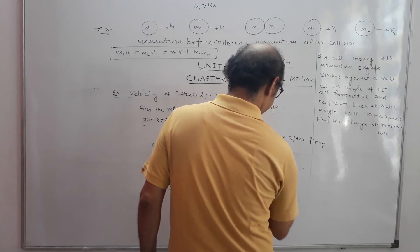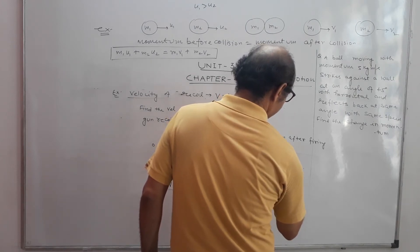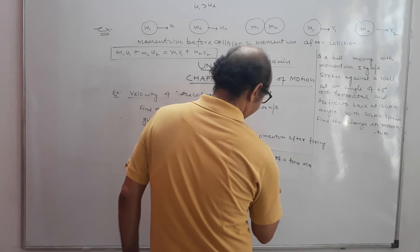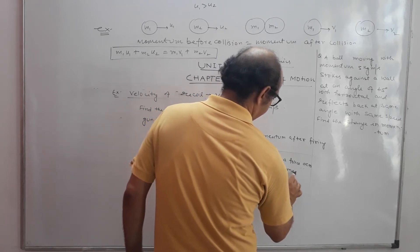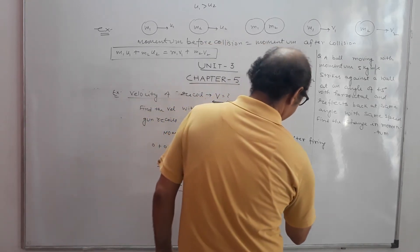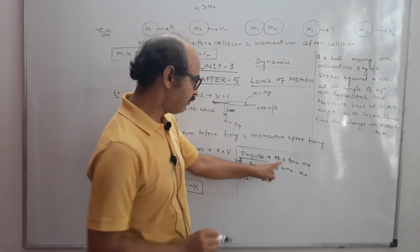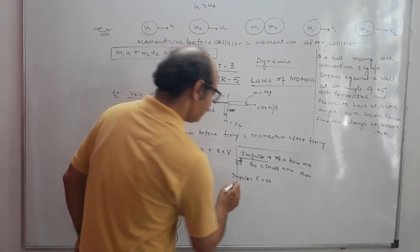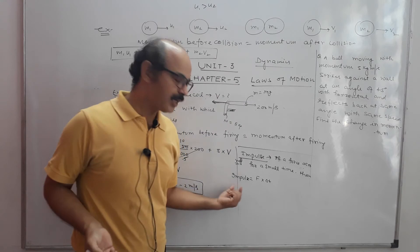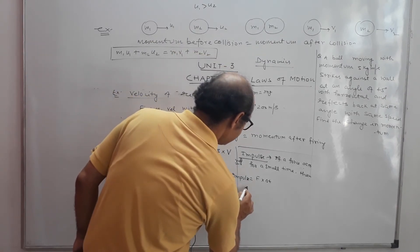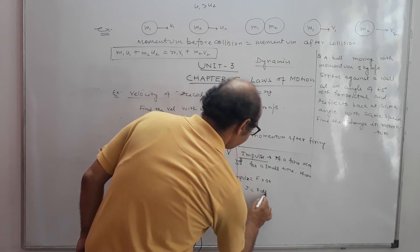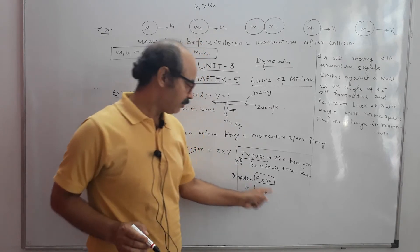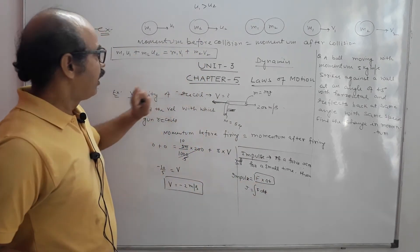If a force acts for a small time, then impulse is equal to F into delta T. The symbol used is generally J. So J is equal to F·dT, and if we want the total, we can integrate it. Impulse is the product of force and time interval. From Newton's second law, F equals delta P by delta T, so F into delta T equals delta P.